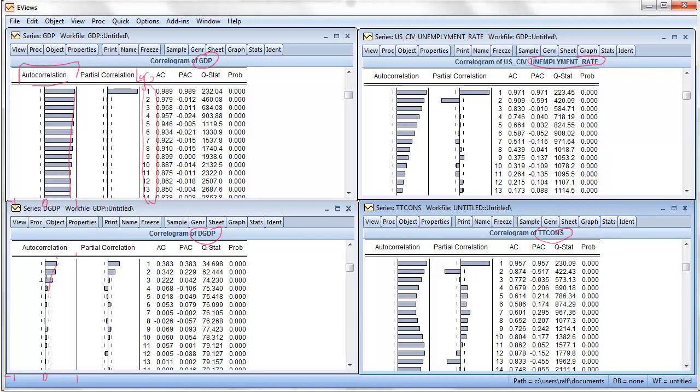What about the change in GDP? Now that starts much lower and basically dies on very quickly. And after three quarter lags, there's no autocorrelation. The unemployment rate looks somewhat in between. It has higher autocorrelations, but a faster decay than GDP.